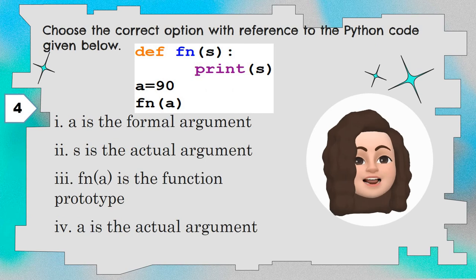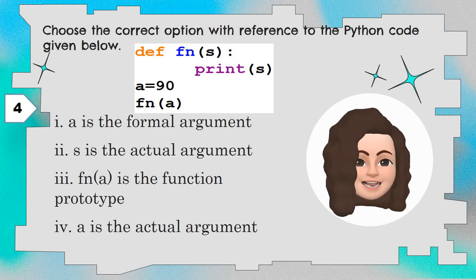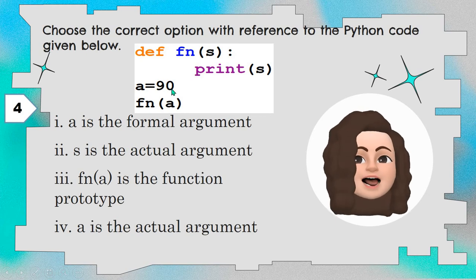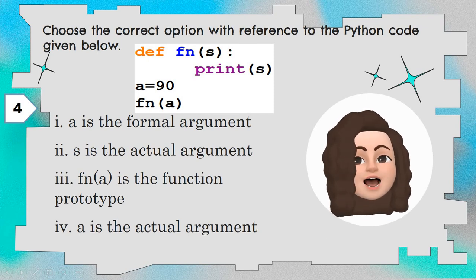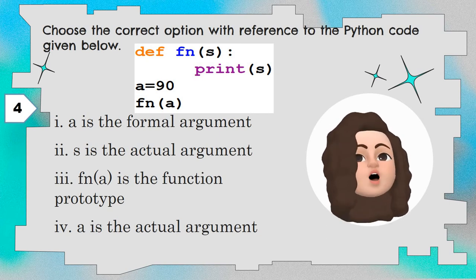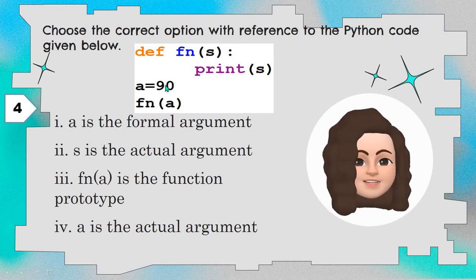Question number 4. Choose the correct option with reference to the Python code given below. def fn(s): the name of the function is fn and one parameter s is given. The body of the function has only one statement: print yes. In the main program a is equal to 90 — we are declaring a variable with value 90. Then the function is called as fn(a), where a is the argument.